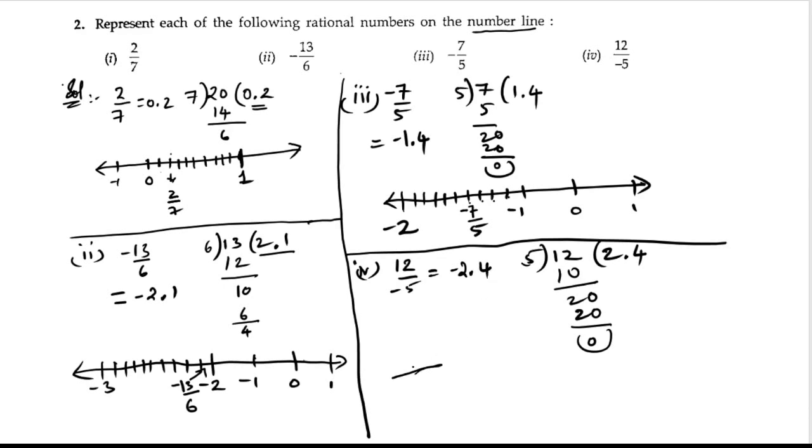Let us draw a line. This is 0, minus 1, minus 2, minus 2.1, minus 2.2, minus 2.3, 2.4, 2.5, 2.6, 2.7, 2.8, 2.9, minus 3.